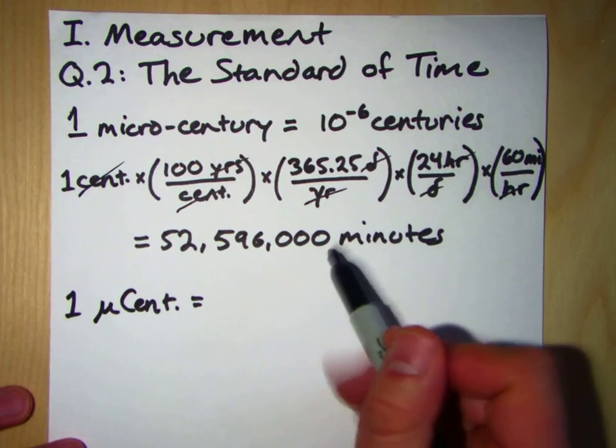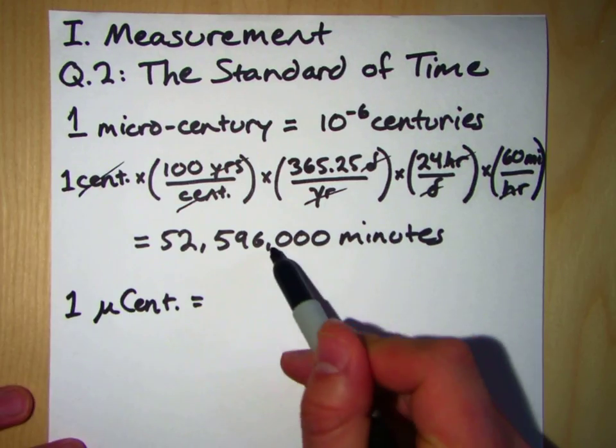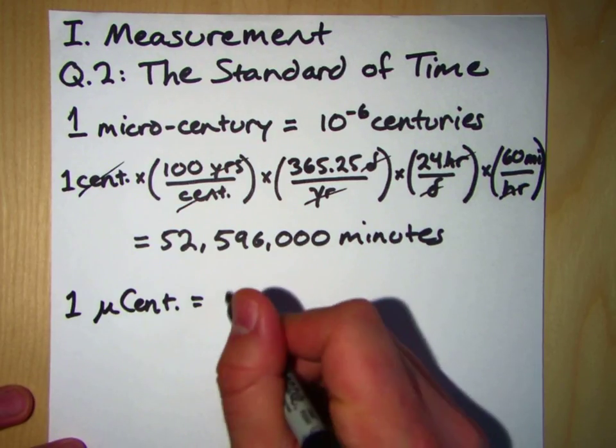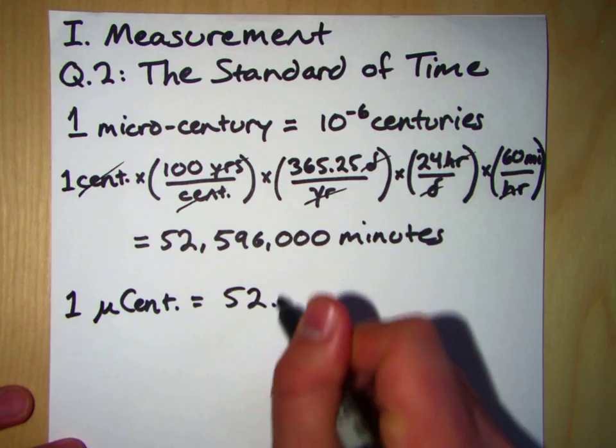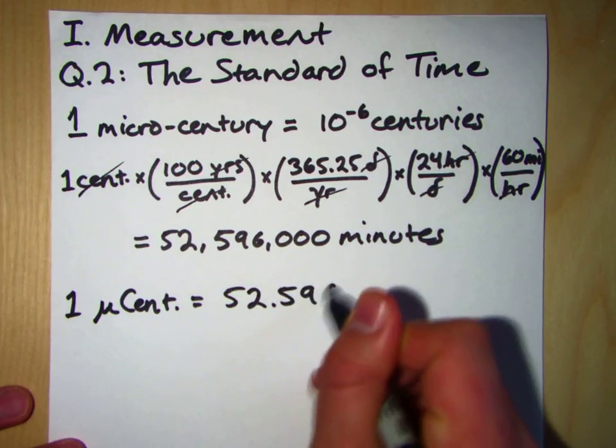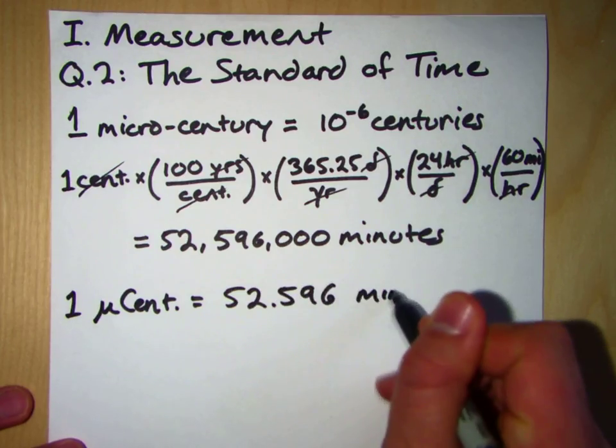and we should get one micro-century is equal to, and dividing by a million here is just 1, 2, 3, 4, 5, 6, 52.596 minutes.